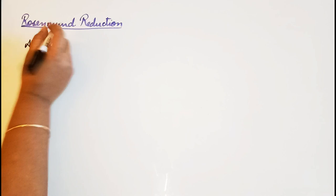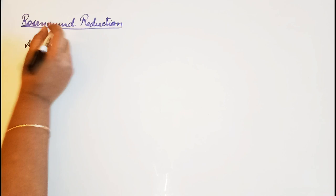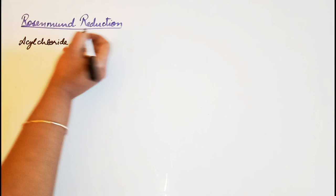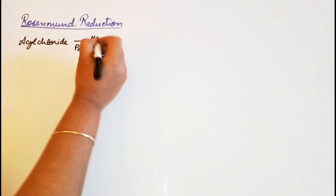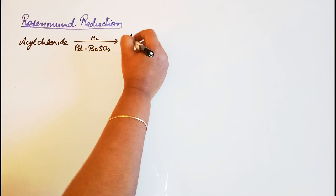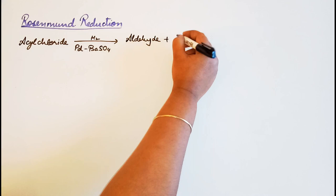Basically, acyl chloride undergoes reduction in the presence of palladium and barium sulfate as the catalyst, and this leads to the formation of the reduced product. We'll get aldehydes and hydrochloric acid.